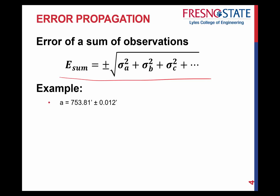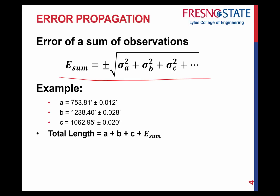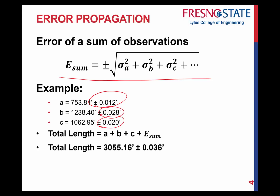Let's take an example. If A is equal to 753.81, with B and C given as well — I want to know what the total length is. The total length is adding up those values, and we also want to calculate what the total error is. These are your standard deviations, already given, so all we have to do is plug those values into the formula. Adding those up gives a total length of 3055.16. Plugging each standard deviation into the formula gives plus or minus 0.036. This allows us to compute the overall length with overall error including each observation.